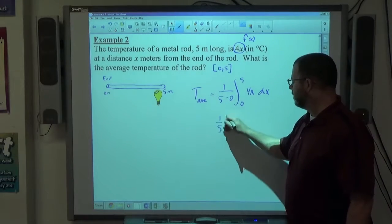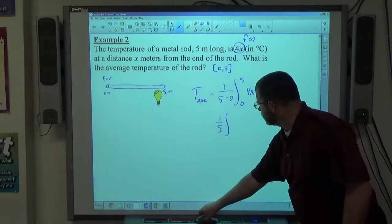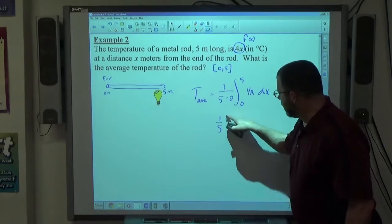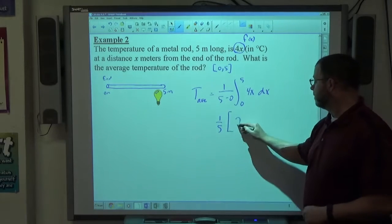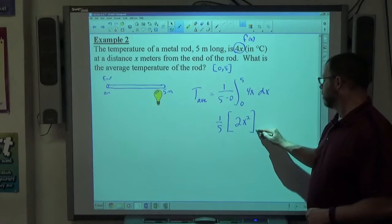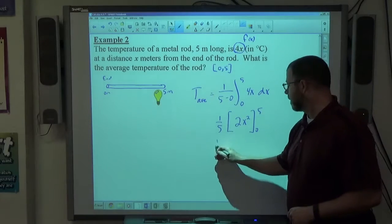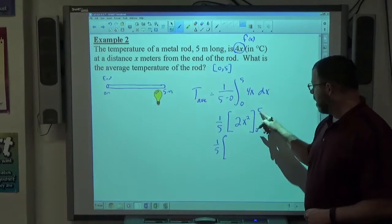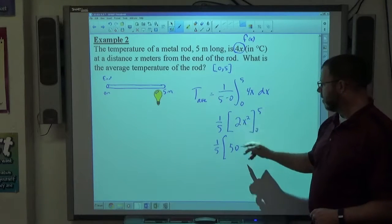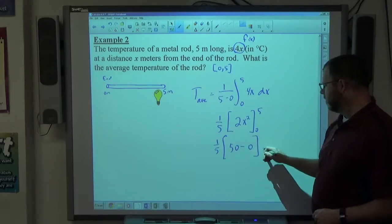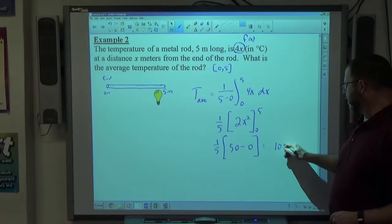So that's going to be 1 fifth. If I integrate 4x, I'm going to get 4x squared over 2, which is 2x squared. From 0 up to 5. 5 squared is 25 times 2 is 50. 0 squared is 0 times 2 is 0. 1 fifth of 50 is 10 degrees Celsius.